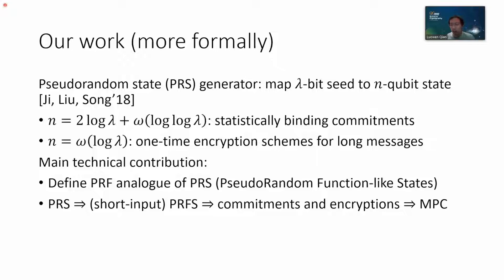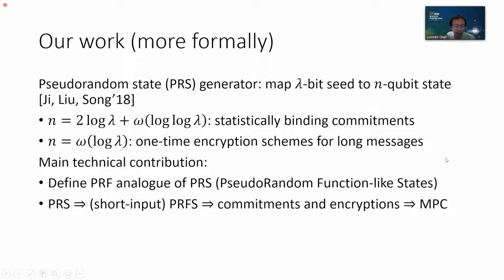The main technical contribution of our work is that we define a pseudorandom function analog of pseudorandom states, called pseudorandom function-like states, or PRFS. Using this as an important intermediate technical tool, we show how to start from PRS to construct PRFS with very short input length, which suffices to construct commitment and encryption, and therefore MPC. We also observe that this new PRFS object seems to be as useful as PRFs classically — in particular, you can instantiate a lot of classical crypto that uses PRFs by instead instantiating with PRFS.